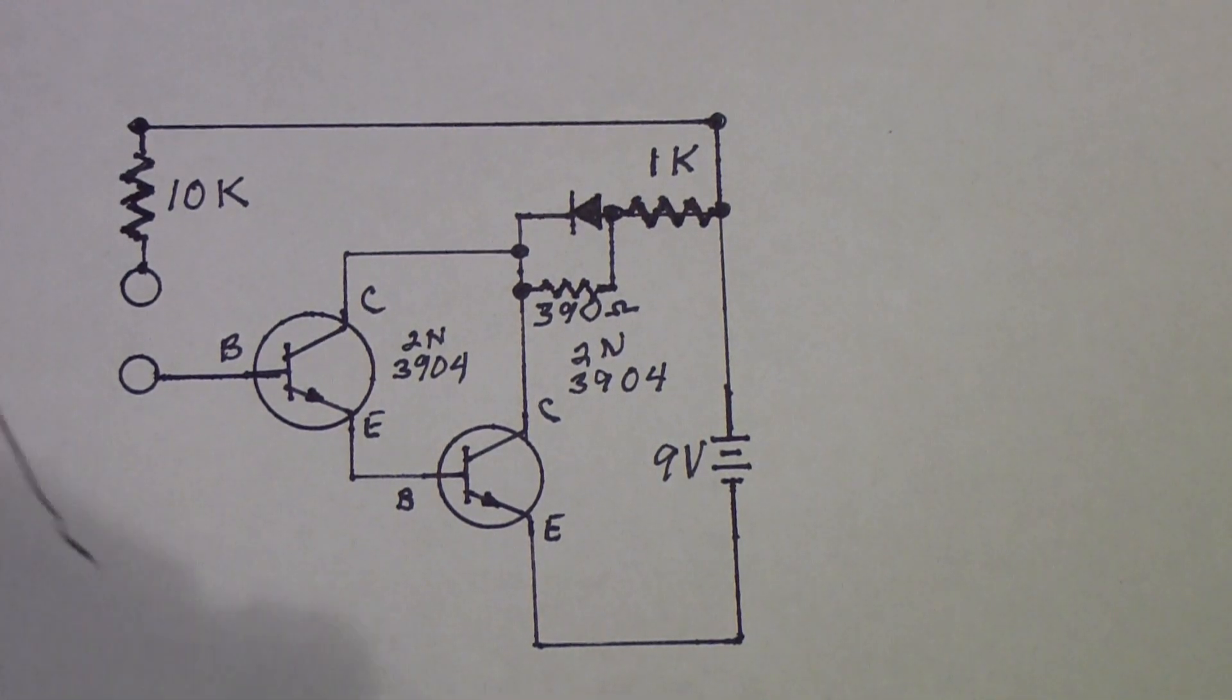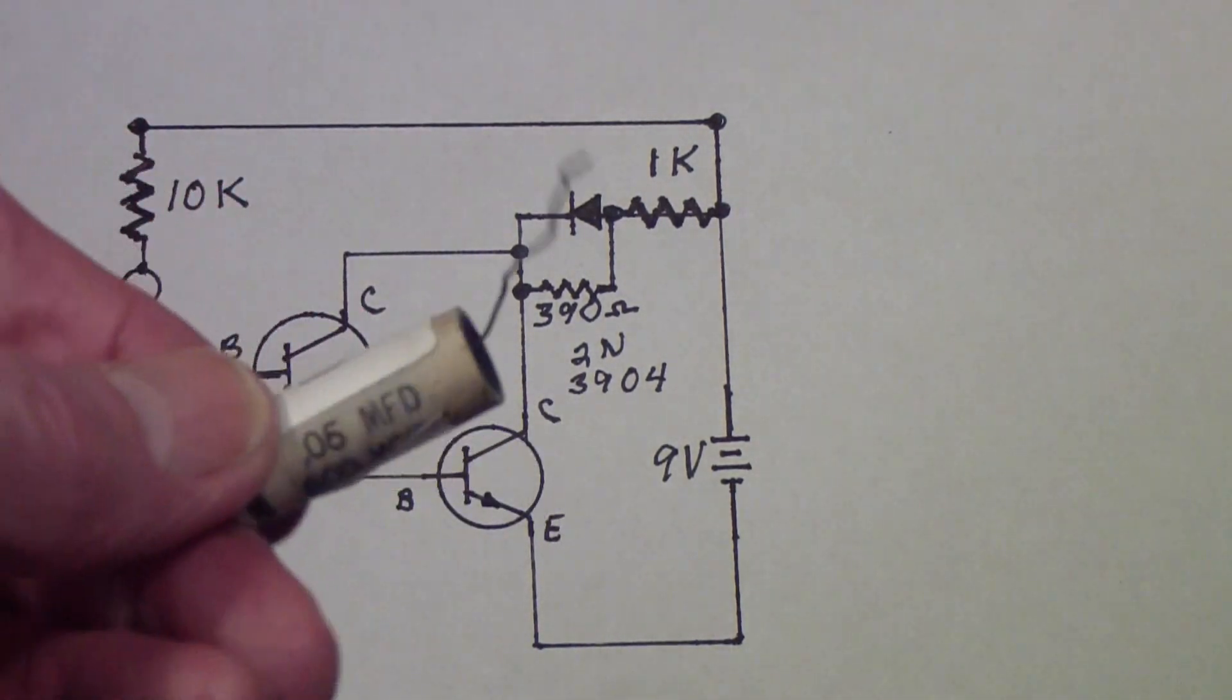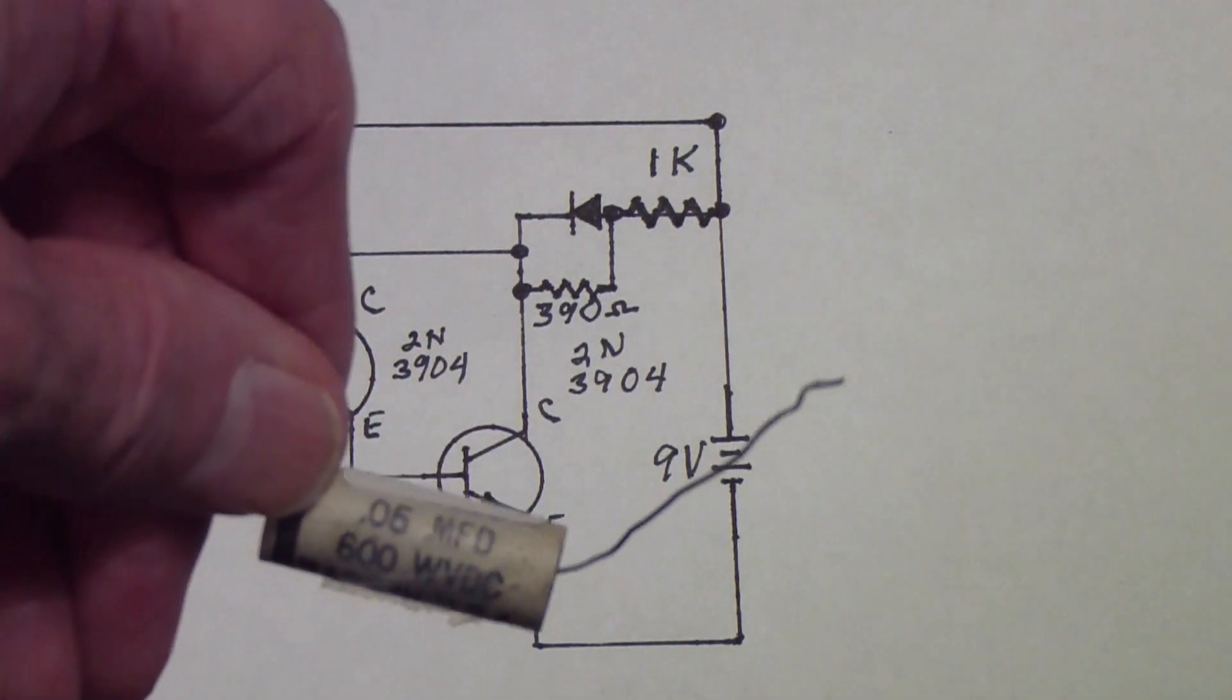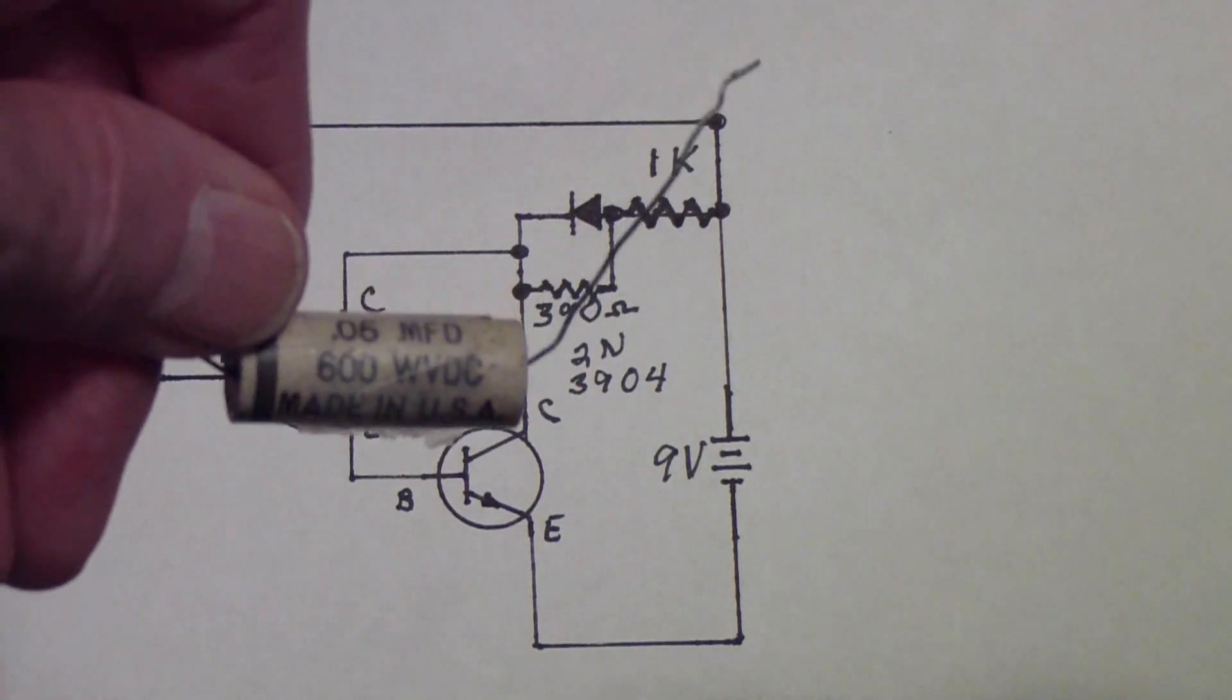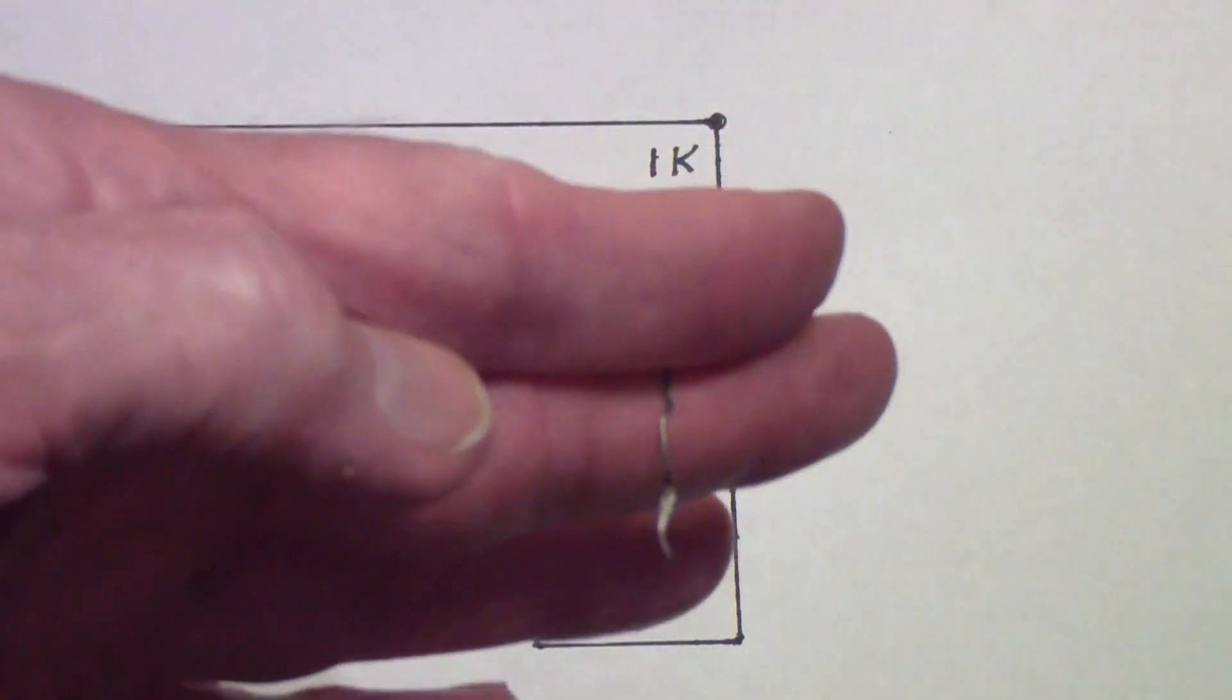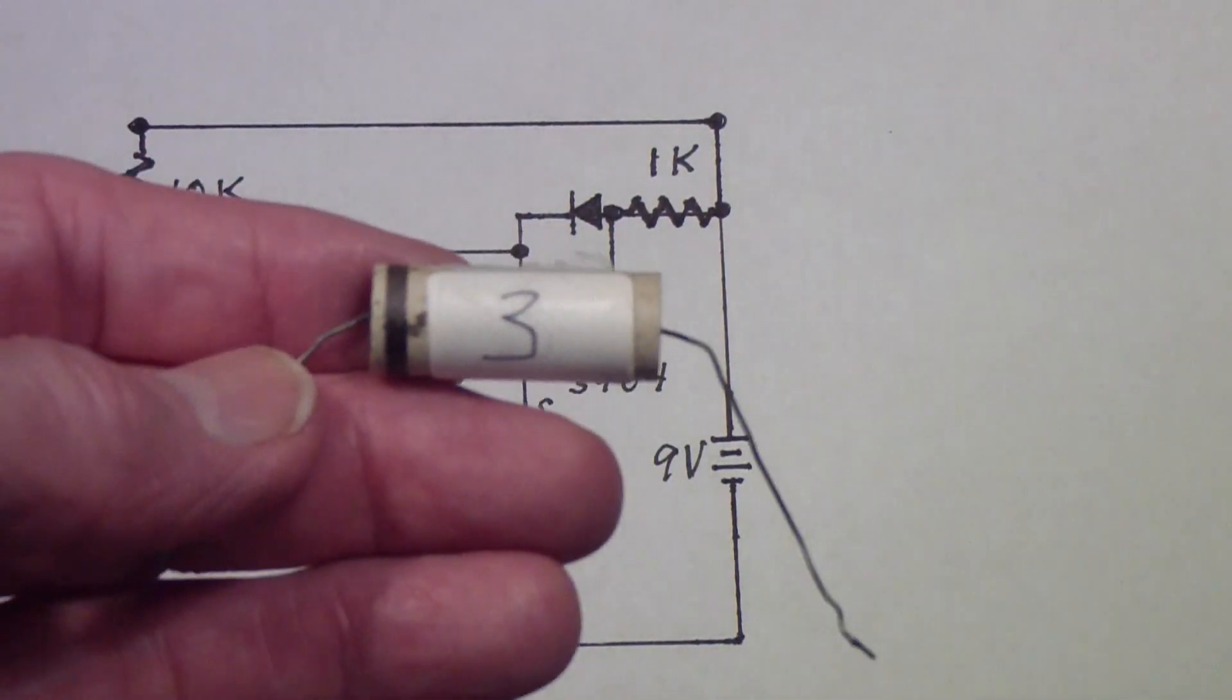As you saw this number 3 capacitor, which is a vintage 0.05 600 volt capacitor that I took out of a Hallicrafters radio, it turns out I didn't need to. This is a perfectly good capacitor and high quality capacitors will last a very long time.